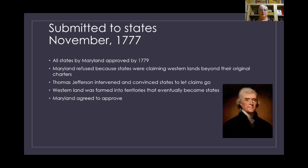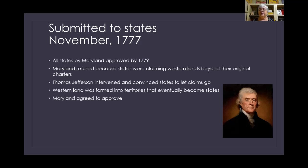Thomas Jefferson went to Virginia, one of the large states at that time, and convinced them to let their western land claim go. That convinced the other states to do the same, and Maryland finally agreed to approve the Articles of Confederation. All of that land to the west of the original 13 colonies was changed into territories, which were eventually made into states and admitted into the union.